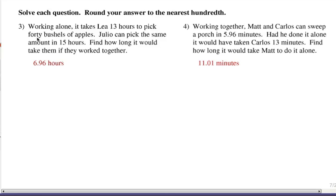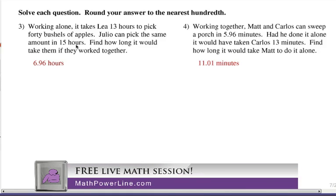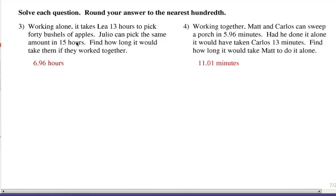Let's look at number three. Working alone, it takes Leah 13 hours to pick 40 bushels of apples. Julio can pick the same amount in 15 hours. Find how long it would take them if they worked together. This is an example of a work algebra word problem. Now, you can see the answer yourself, about seven hours. To the nearest hundredth would be 6.96. If you had trouble getting that, let's check it out.